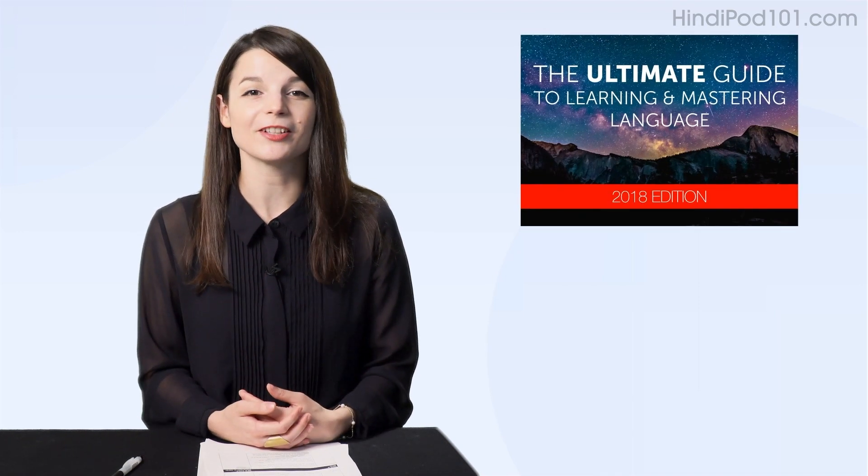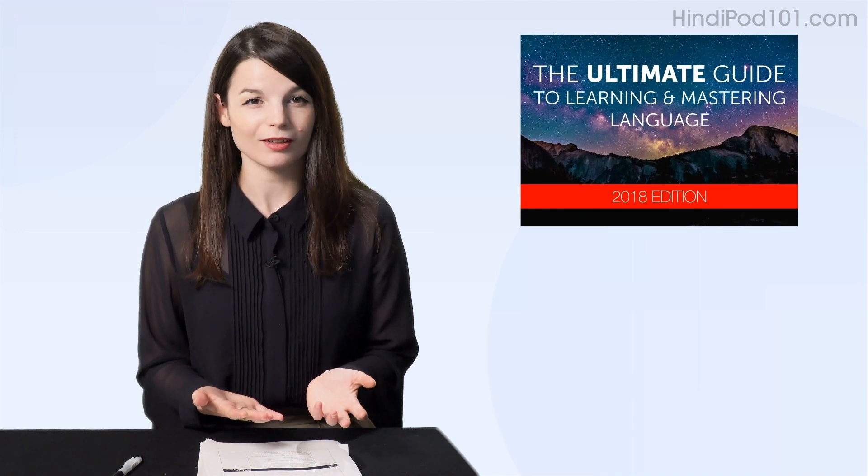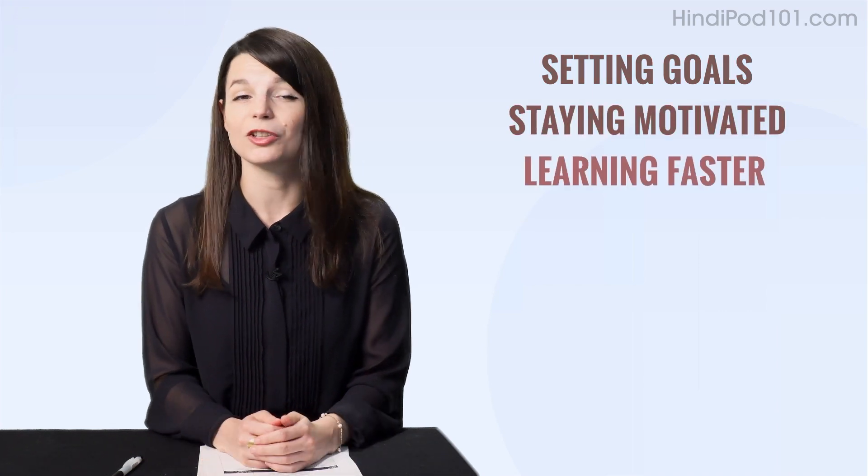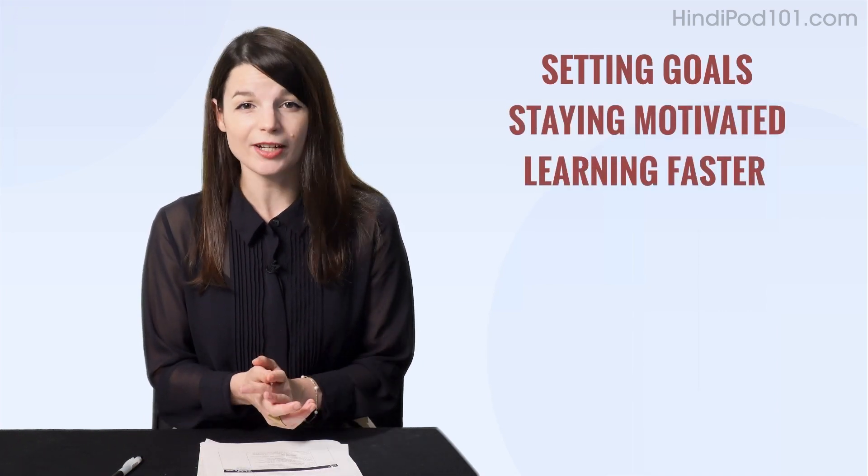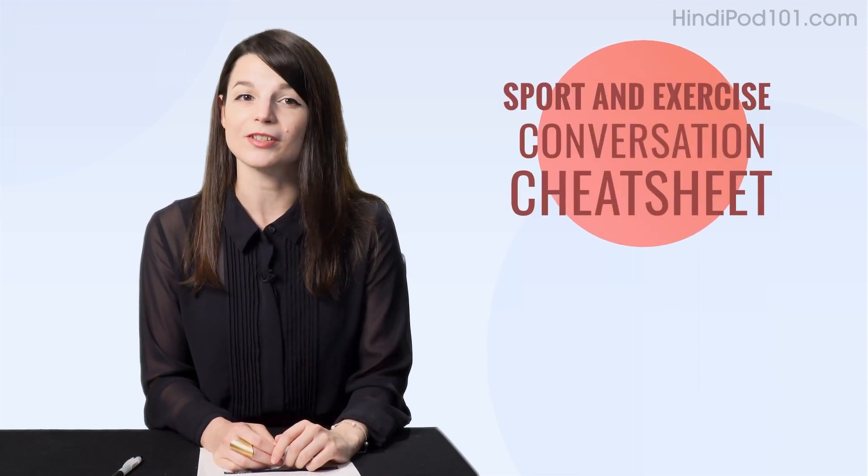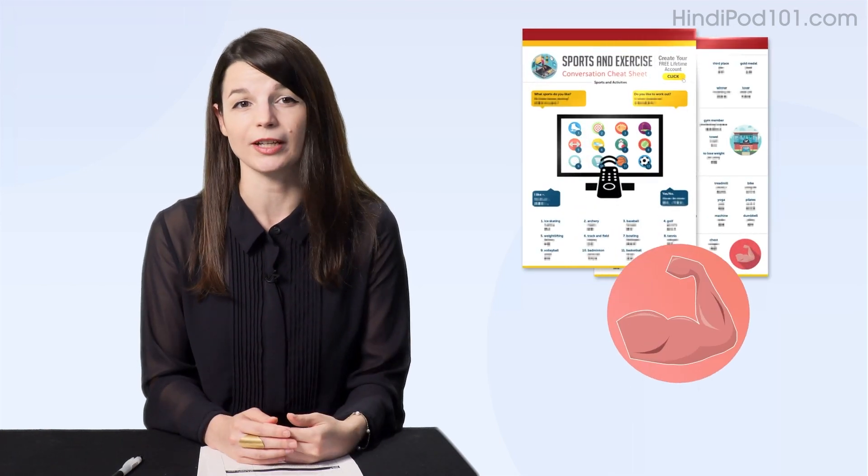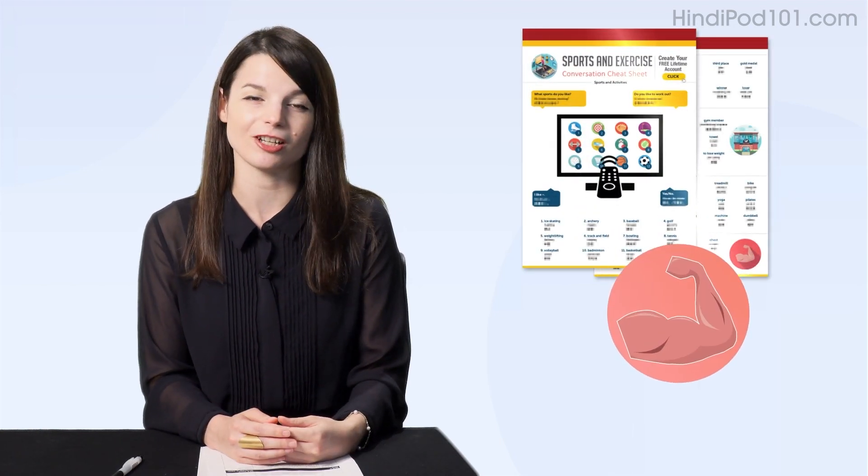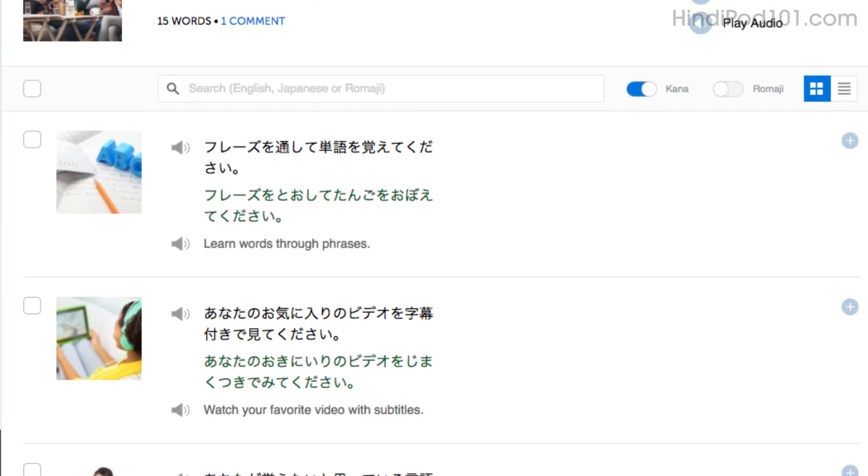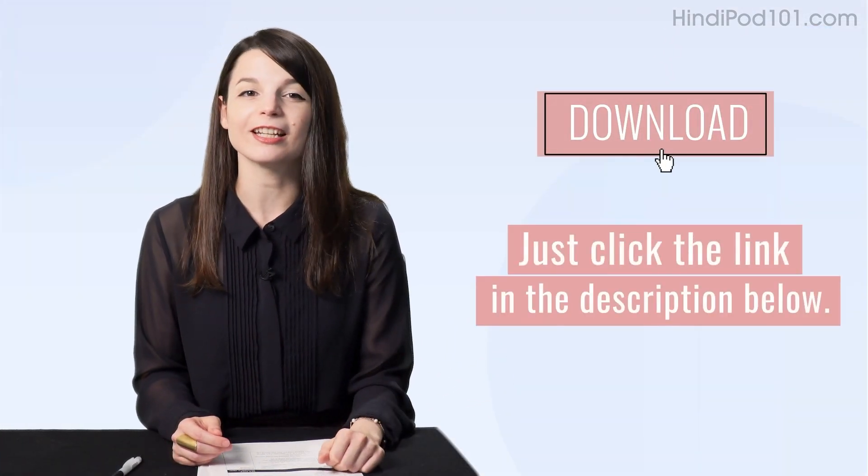First, the Ultimate Guide to Learning and Mastering Language ebook. This is a 52-page ebook that covers the learning tactics I just talked about. Setting goals, staying motivated, learning faster. If you're interested in learning strategies, be sure to download it. Next, the Sport and Exercise Conversation Cheat Sheet. If you want to talk about sports and fitness in the language you're learning, then you'll love this PDF cheat sheet. And finally, how to improve your speaking skills. It's another language strategy lesson. To get these free lessons and resources, just click the link in the description below.